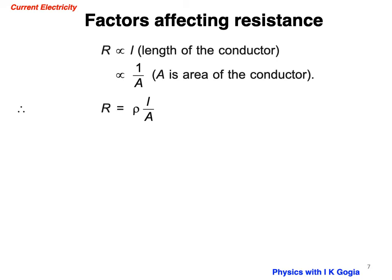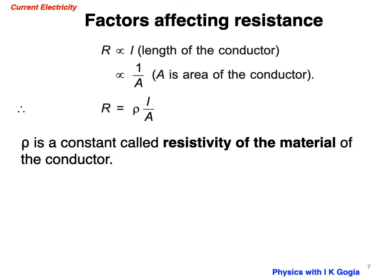Here area of cross-section will be pi R square for a wire with circular cross-section. It will be x square if the cross-section is square or A into B if the cross-section is rectangular and so on. Rho here is a constant of proportionality. We call it resistivity of the material of the conductor. Mark the name resistivity of the material. So it is a characteristic of the material and is independent of the shape and size.